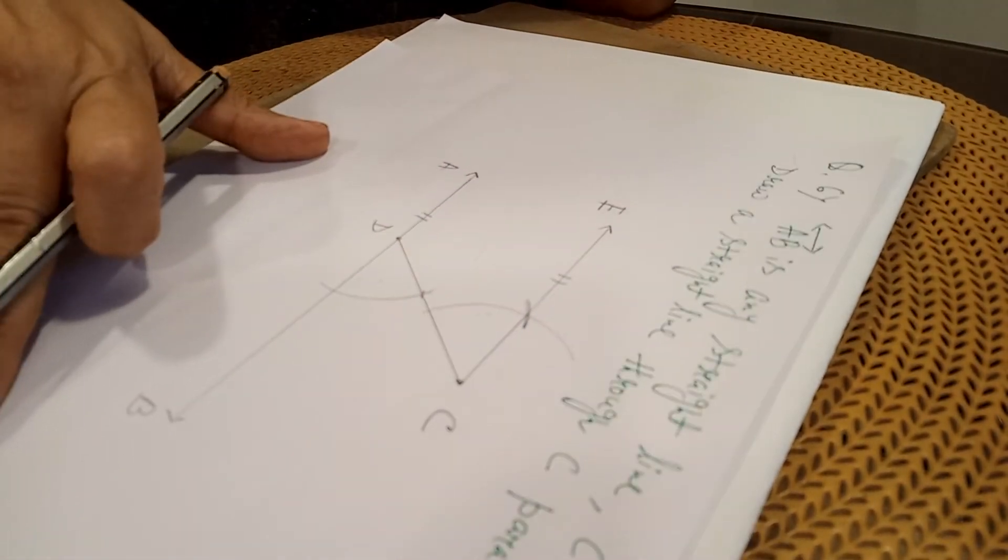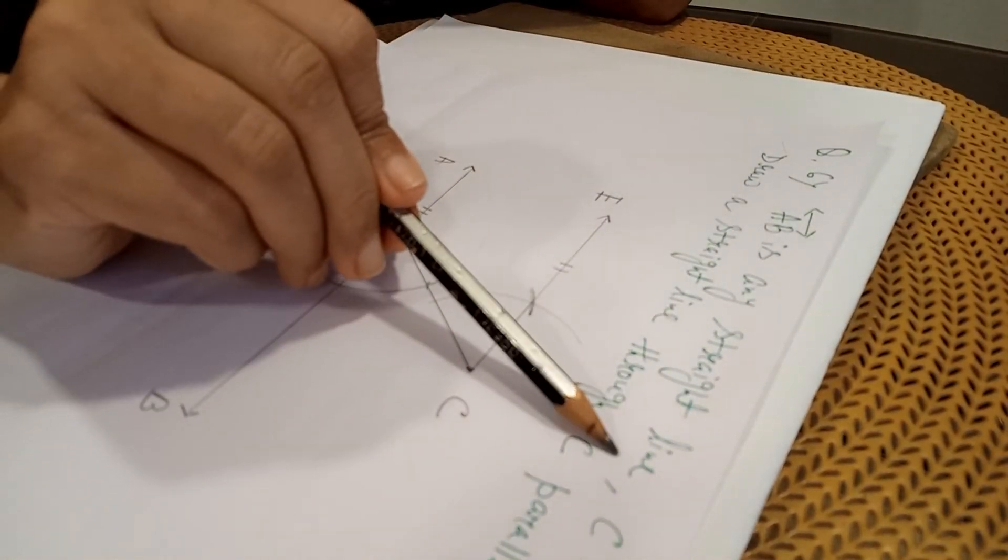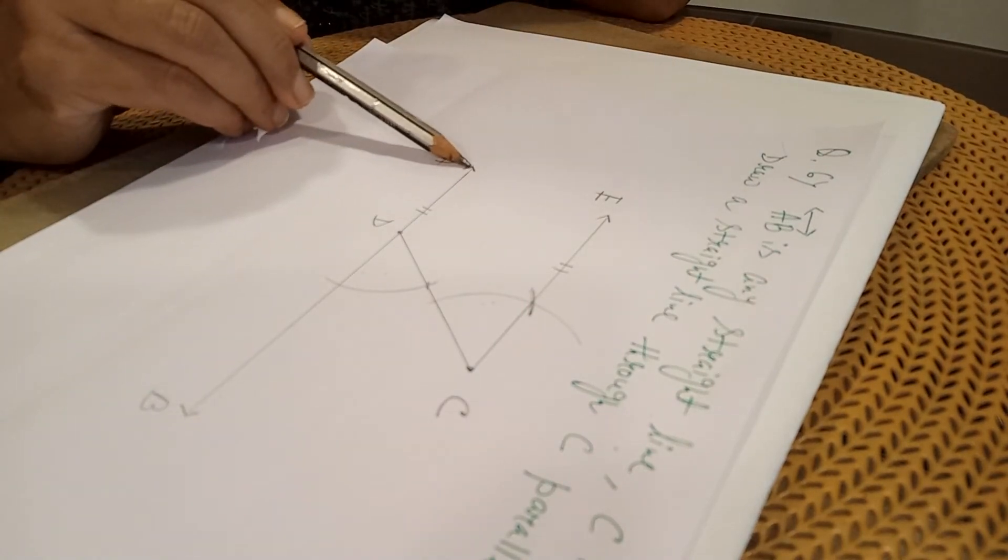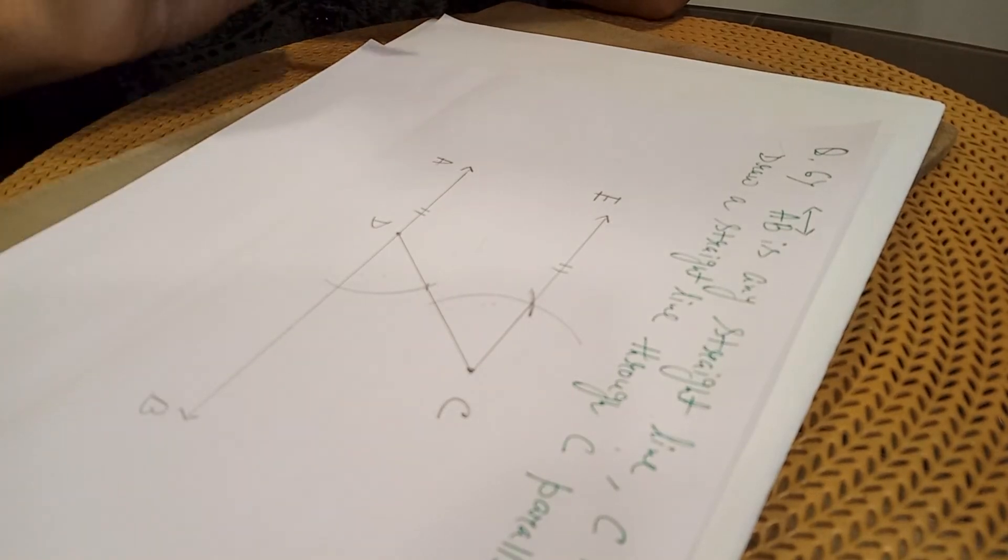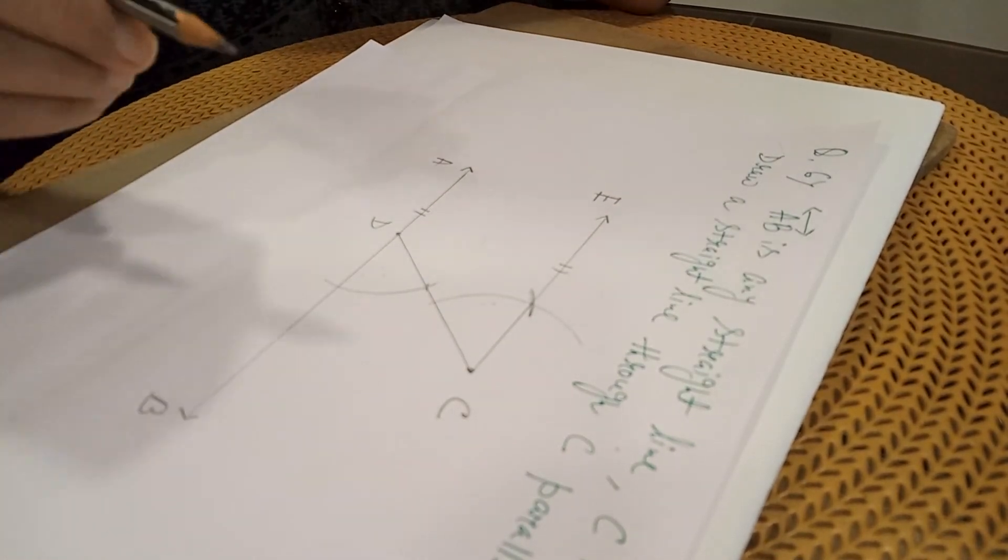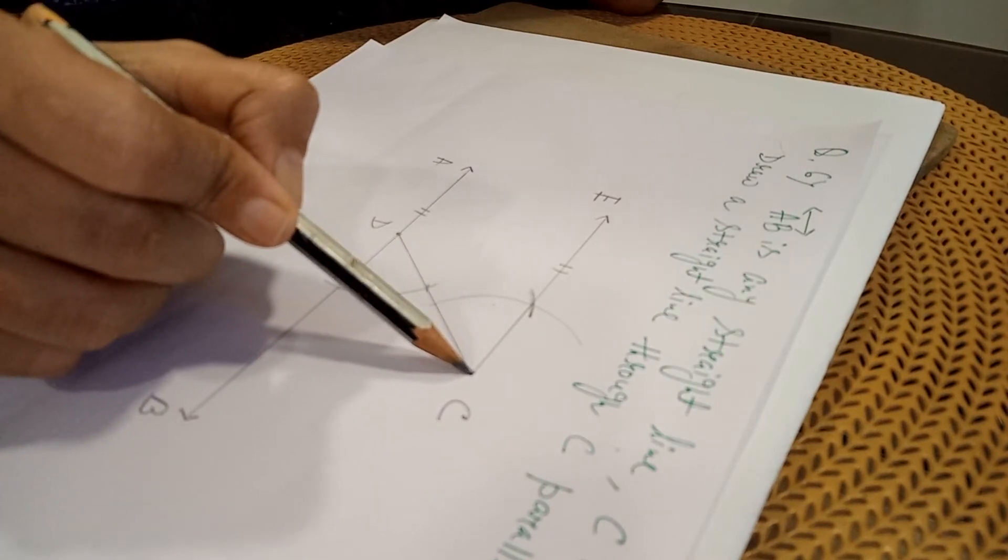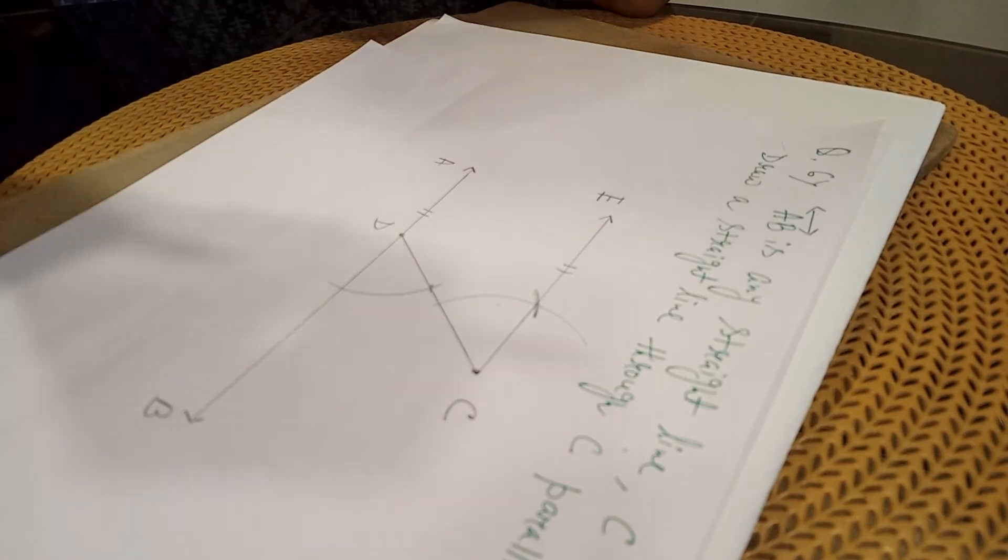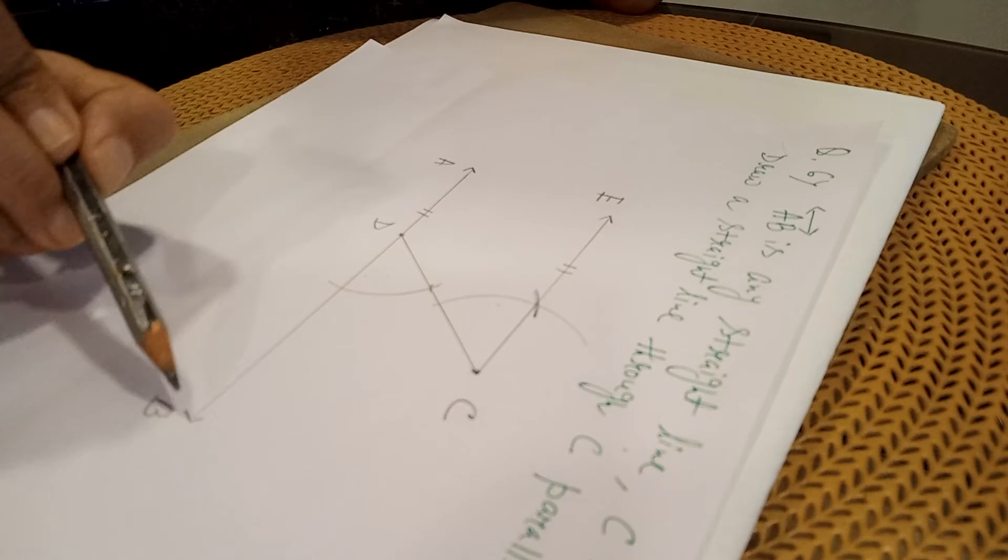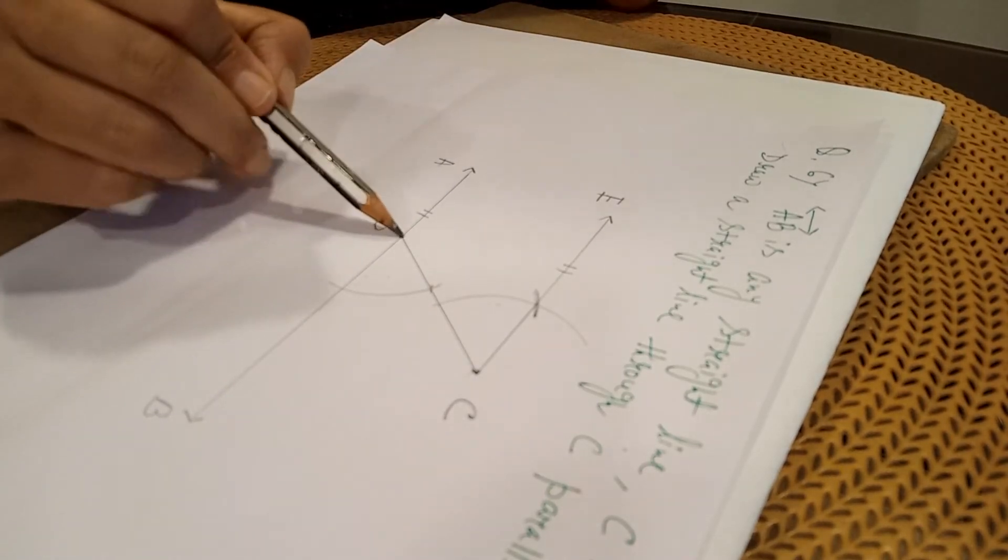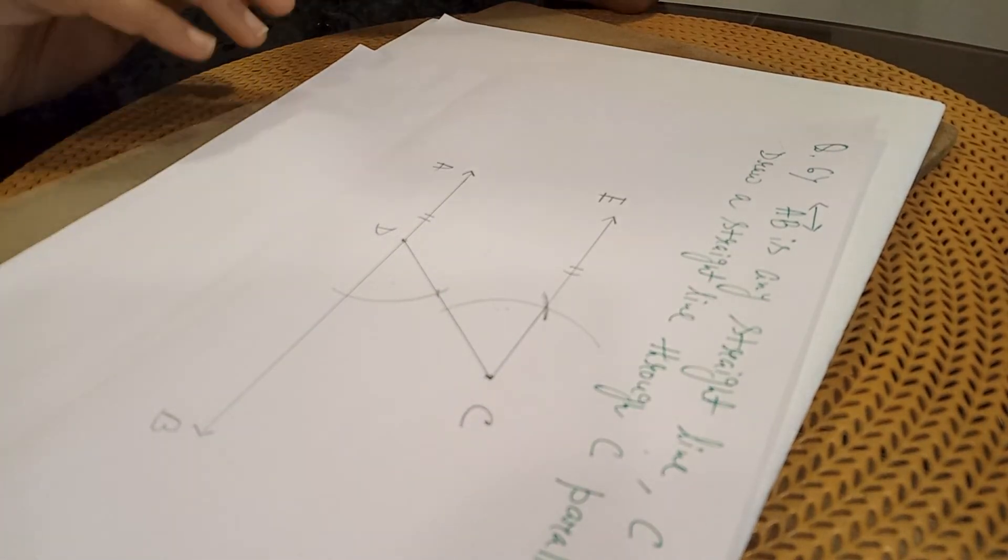So, first, I am telling again what you have done. Here, AB is any straight line. Measurement not given. With the help of ruler, draw one line AB. Give arrows on both sides. This can be extended. Now, C is an external point. Take anywhere. Then, as C is here, I have taken another point D on the line AB. Then, I have joined CD.